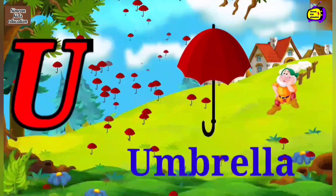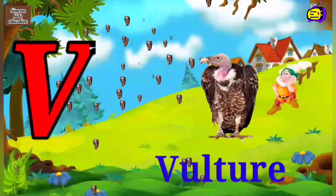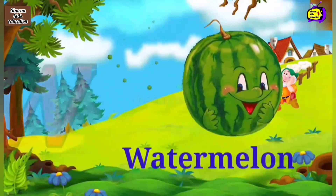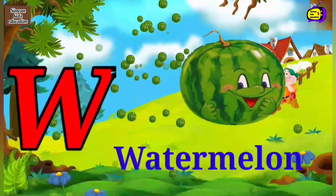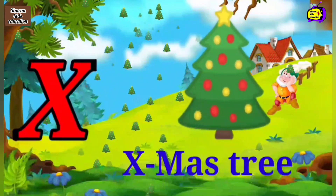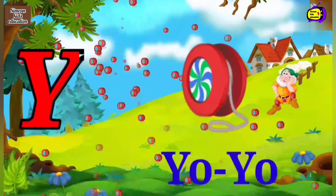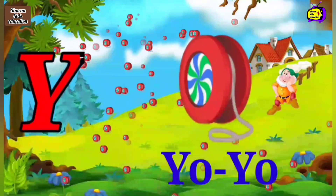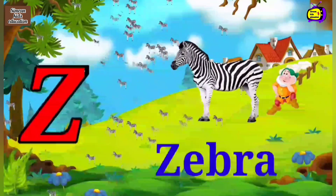U for Umbrella, Umbrella means chata. V and W for Fighter and Wulg elementary, Walter means galleth. W for Watermelon, Watermelon means Torvooz. X for X mastery, X mastery means Christmas Kaper. Y for Yo-Yo, Yoyo means yo-yo. Z for Jabra, Jabra means zebra.